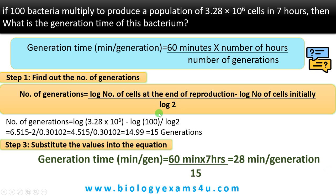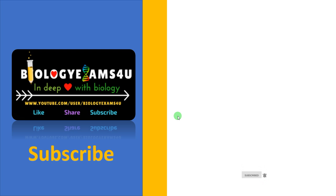One more point to add: log 2 is used in this equation because each cell produces 2 offspring each time upon division. Hope you are clear — this is how we calculate generation time. I will be leaving a question in the comment box so you can work it out for complete understanding. Take care, stay blessed, and thank you so much. You are with biologyexamsforyou.com.